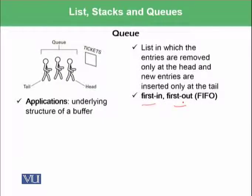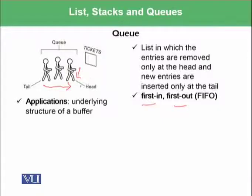A queue has many applications. For example, consider a queue of people getting tickets for an event — the person at the start of the queue exits first, and each new person arriving joins at the tail.